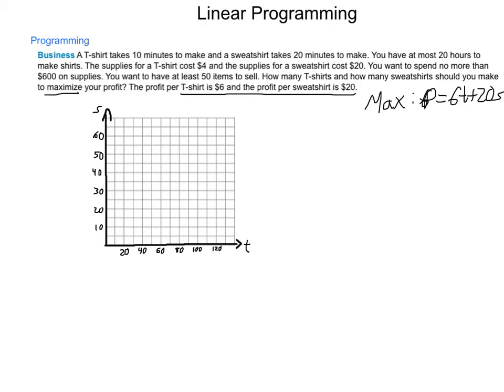Let's start pulling out other information. The first that we're going to look at is a shirt takes 10 minutes to make and a sweatshirt takes 20, and we have at most 20 hours to make shirts. So 10T plus 20S has to be less than or equal to, because we have at most 20 hours. The 10 minutes and 20 minutes are just that, they're minutes. We have to convert our 20 hours into minutes. 20 times 60 is 1,200. So our first constraint is 10T plus 20S is less than or equal to 1,200.